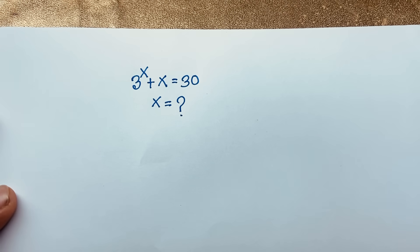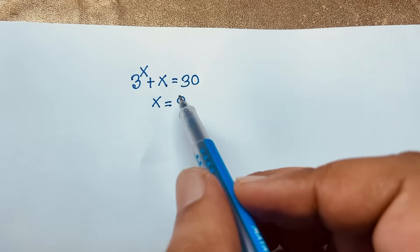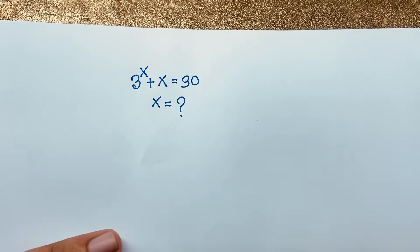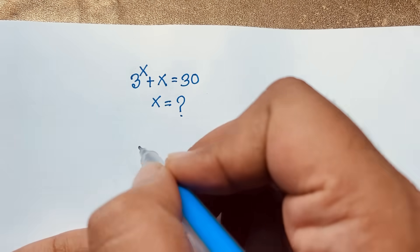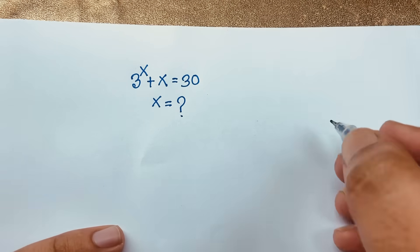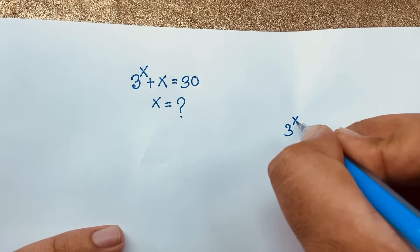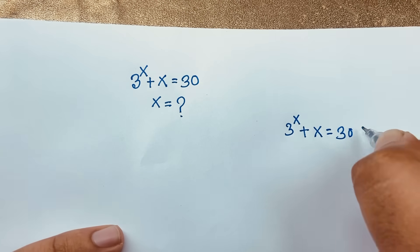Hello everyone, welcome to Raster's classroom. Today we have solved a nice exponential math problem: 3 to the power x plus x is equal to 30. What is x? I solve this question using the Lambert W function.